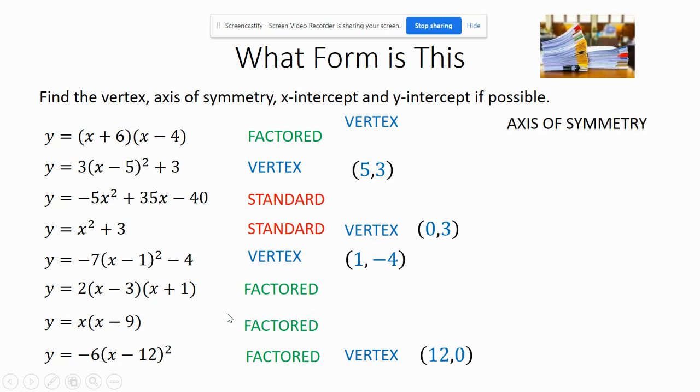Now let's find the axis of symmetry. Because I can do that from vertex form because real simply will be x equals whatever the x values are. Notice x value is a five, x value is a zero, one, twelve. That's the axis of symmetry because vertex form tells us both those.